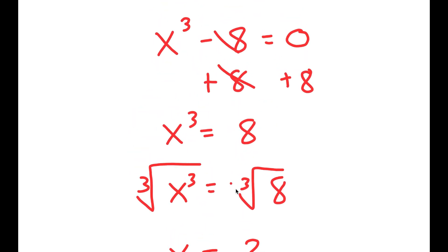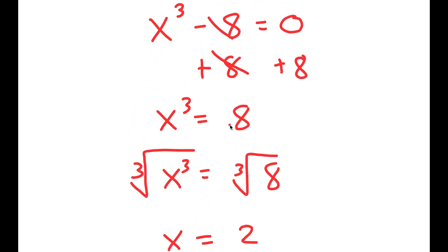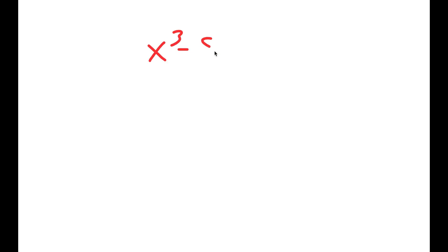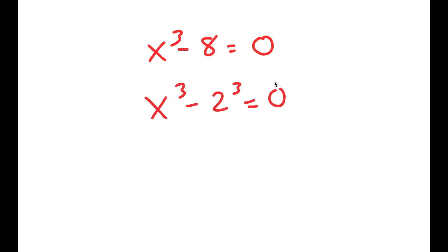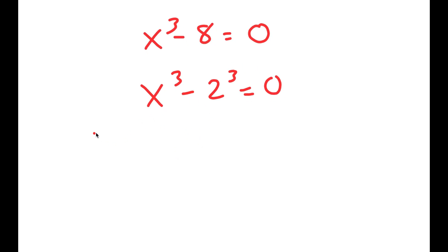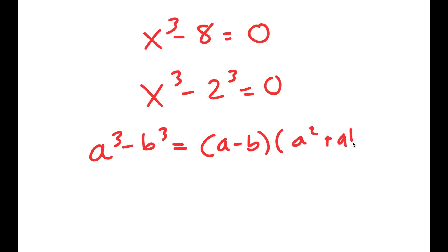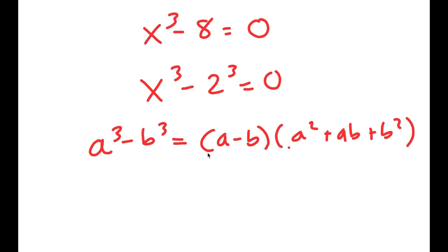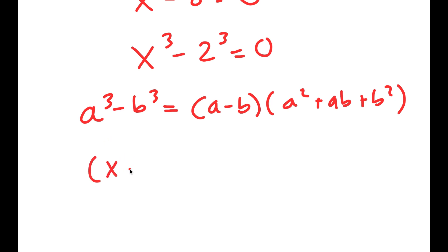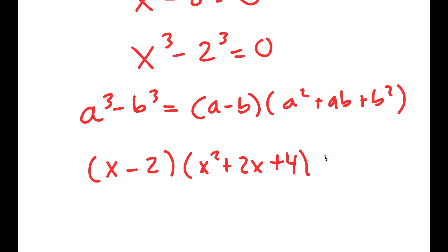But actually, there are more than one solution to this equation. I'm going to rewrite the equation x to the power of 3 minus 8 equals 0, and rewrite 8 as 2 to the power of 3, so I get x to the power of 3 minus 2 to the power of 3 is equal to 0. Now I'm going to use the formula a to the power of 3 minus b to the power of 3 equals a minus b times a squared plus ab plus b squared. This turns into x minus 2 times x squared plus 2x plus 4 is equal to 0.